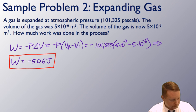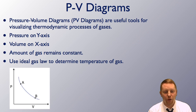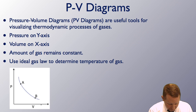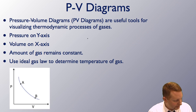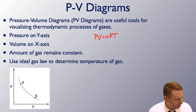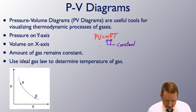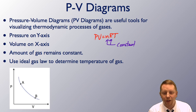Let's look at PV diagrams — pressure-volume diagrams. These are useful tools for visualizing thermodynamic processes of gases. We put pressure on the y-axis and volume on the x-axis, and the amount of gas remains constant. From the ideal gas law, PV equals nRT, where n and R are constants. So we can find pressure and volume from the graph, and knowing n and R are constant, we can also find temperature using calculations from the graph.